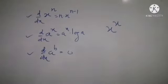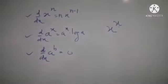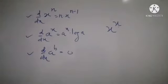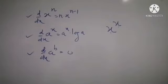x raised to x — yes, it is a base index form. Obviously it is not a power function, because in a power function the index must be constant, but here the index is a variable. This is not an exponential function either, because in an exponential function the base is a constant, but here the base is again variable x. So this is not an exponential function, and it contains a variable, not a constant.